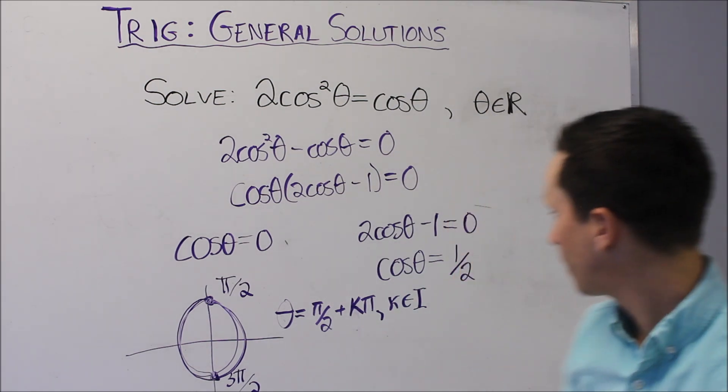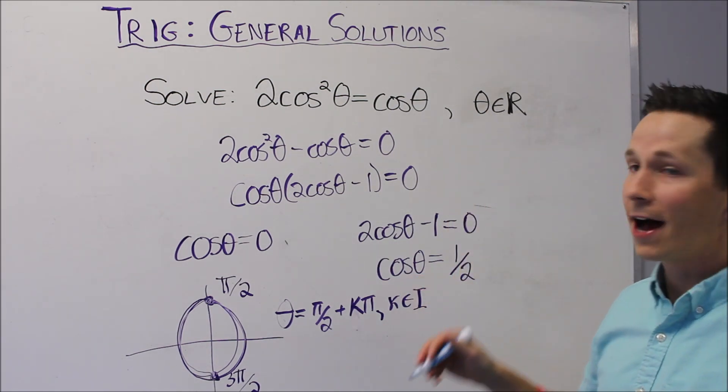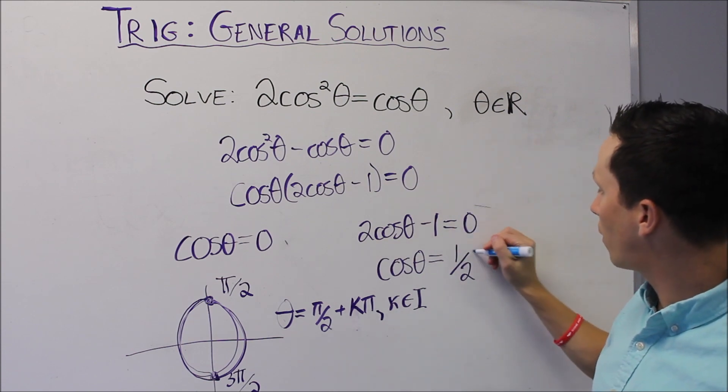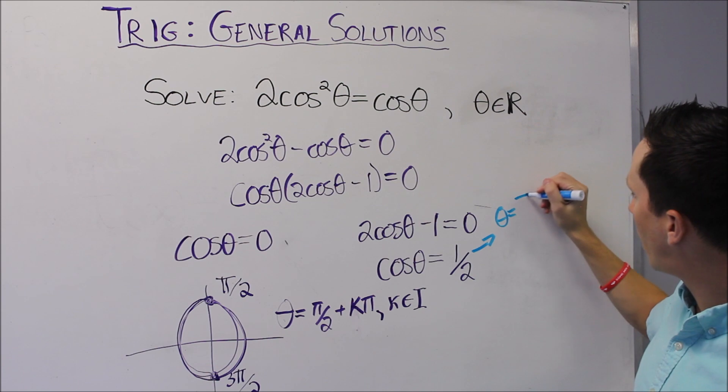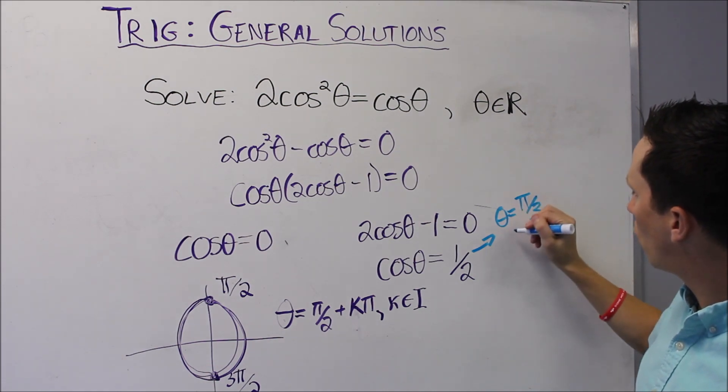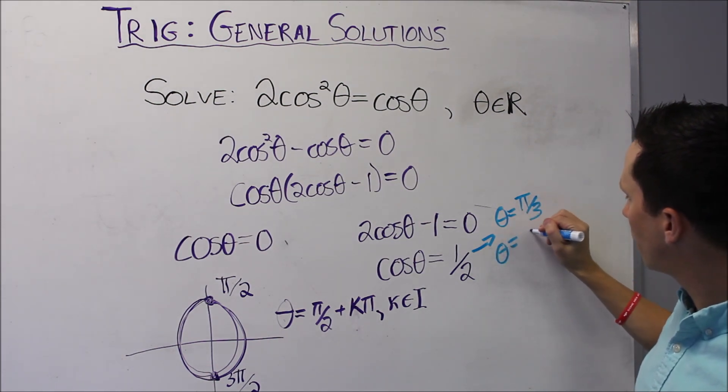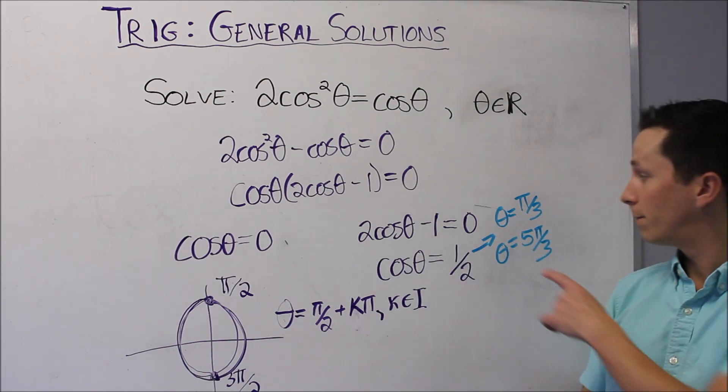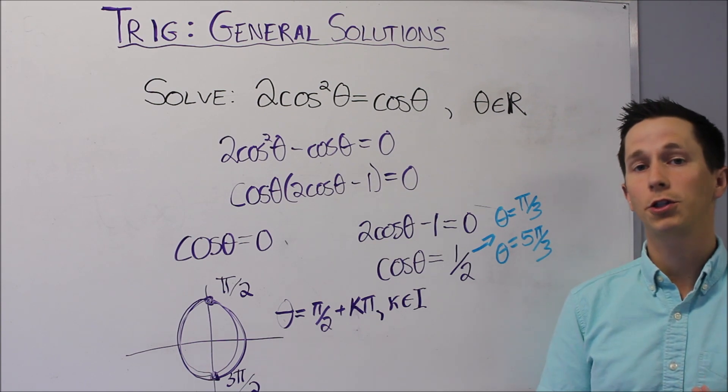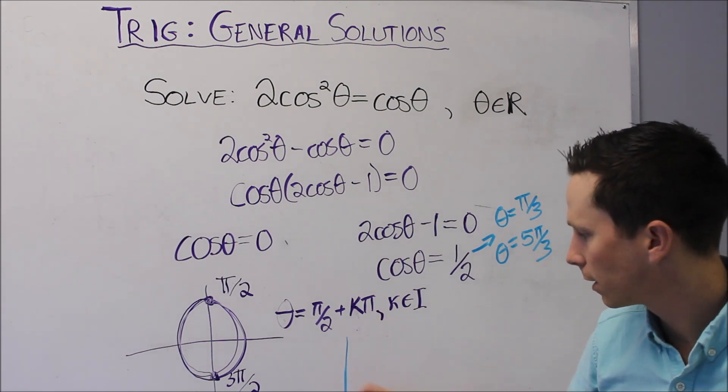Now we need to do the second bit. Cos theta equals a half. Where does that happen? We know that that happens when theta equals π over 3 or theta equals 5π over 3, because cos is positive in the first and the fourth quadrant.